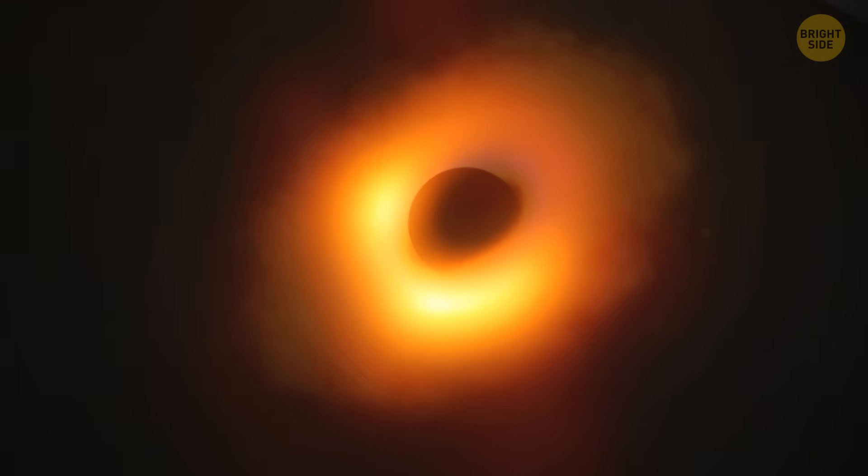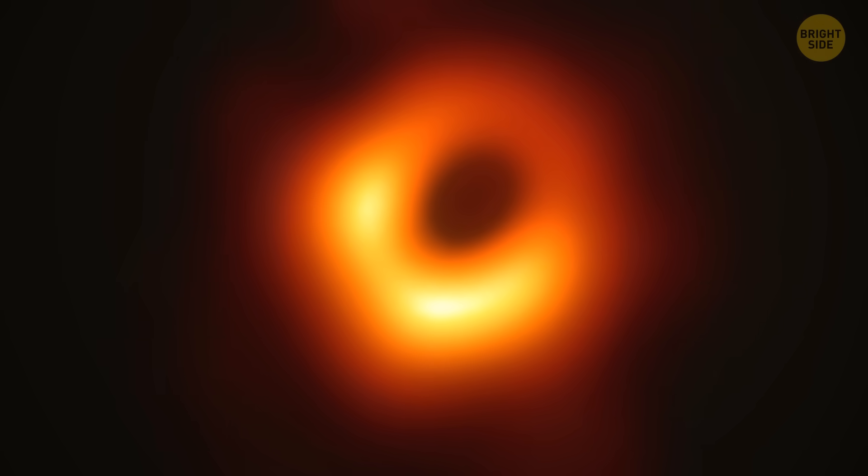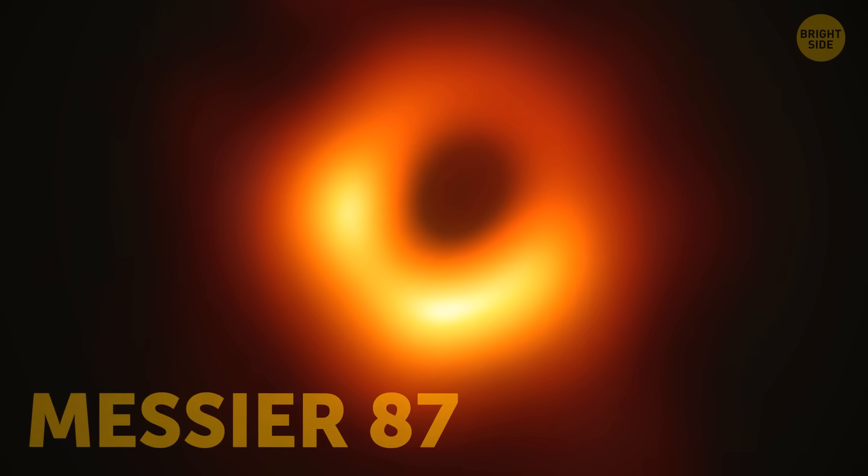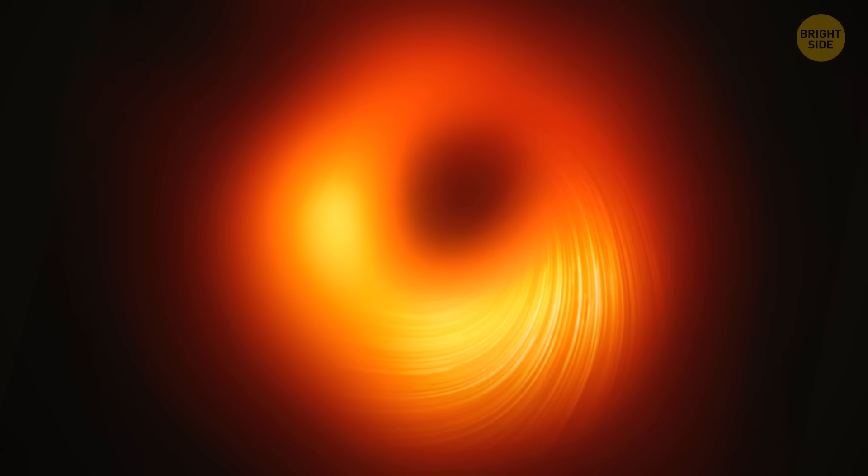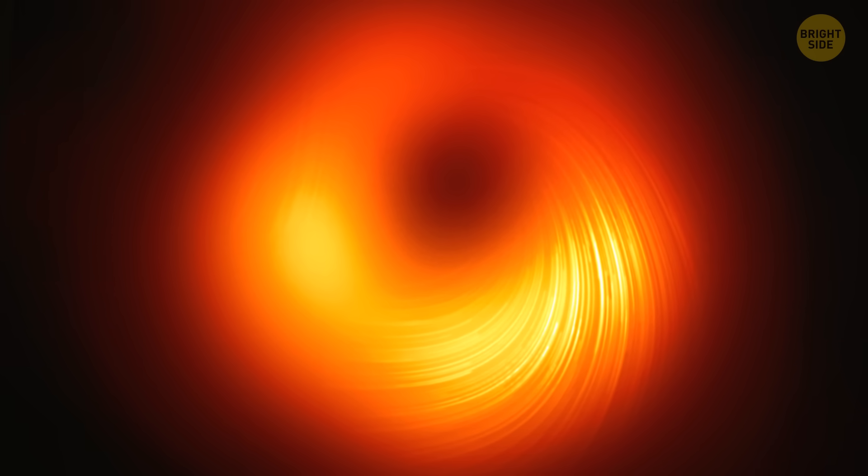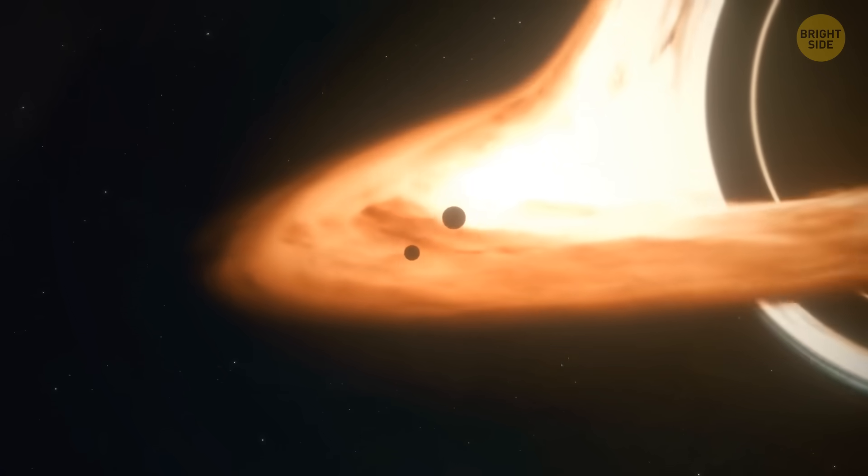Do you remember that first black hole we ever captured in a photograph? It's located in the Messier 87 galaxy, and it may look small and cute in the photo, but in reality, it's capable of absorbing our entire solar system up to the Orion belt, and even further.